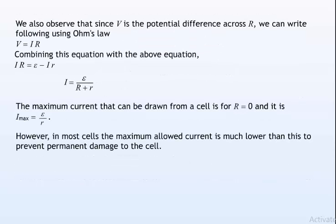We also observe that since V is the potential difference across R, we can write the following using Ohm's law: V equals IR. Combining this equation with the above equation, IR equals epsilon minus Ir. I equals epsilon by R plus r. The maximum current that can be drawn from a cell is for R equals zero and it is I maximum equals epsilon by r.